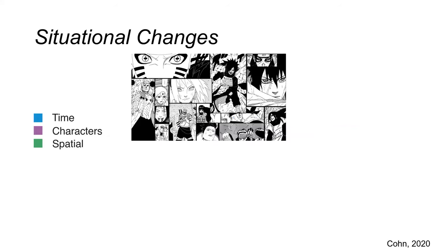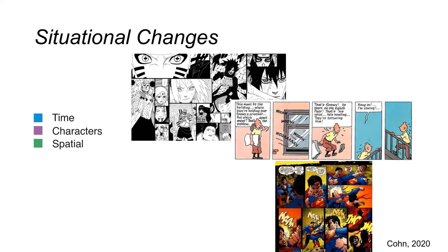There are also cultural variations in situational changes seen in comics. Comics from East Asia had more changes in characters than European and American comics, while the reverse trend occurs for time changes. In the first example from Japanese manga, we have lots of characters, but we cannot be sure if time progresses, because we might be seeing different characters at the same time. While in the Tintin European comic, we see the same character but time progresses — and that is also the case in the American superhero comic.